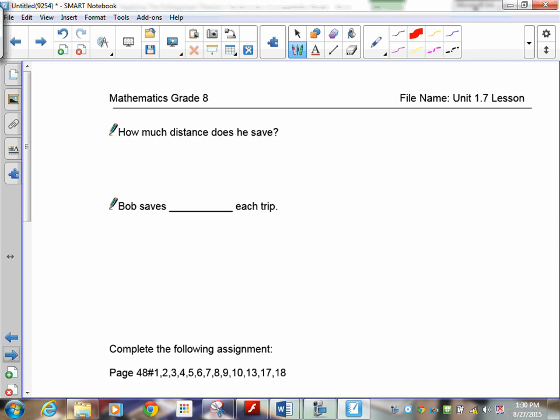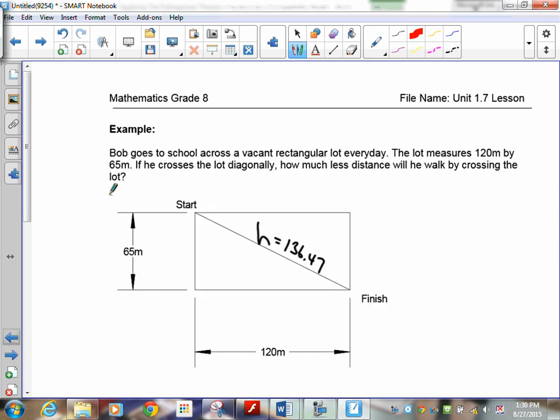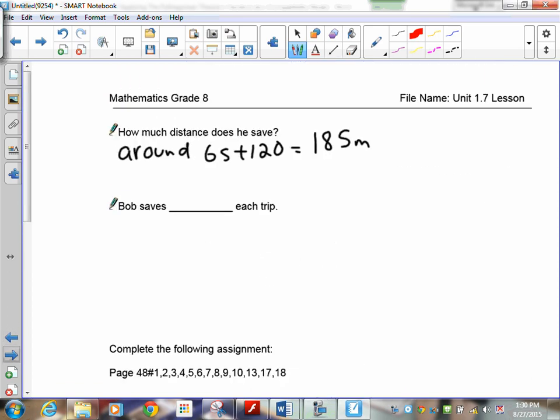So, now let's go on to the question. How much does he save? Well, he has to go around the lot. He's going to be traveling 65 plus 120. That's how far it is around the outside of that lot. So, if he walks around the outside, he's going to travel 185 meters. If he crosses the lot, we get 136.47. So, how much distance does he save? Well, you've got to take 185 minus the 136.47. And when you subtract it, you'll find that he saves 48.53 meters each trip.